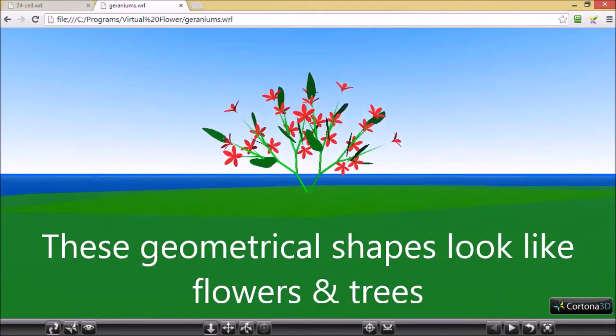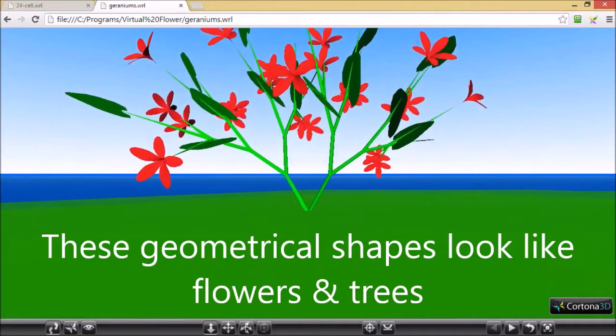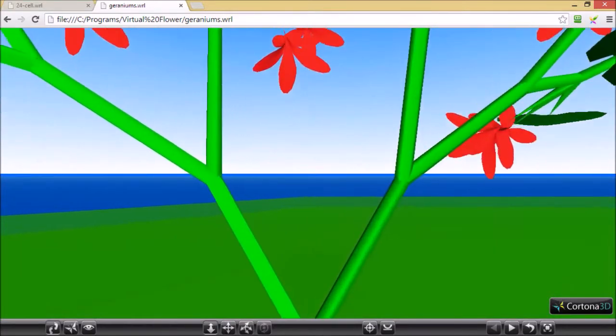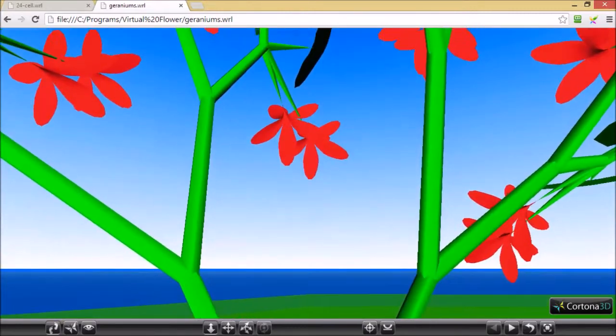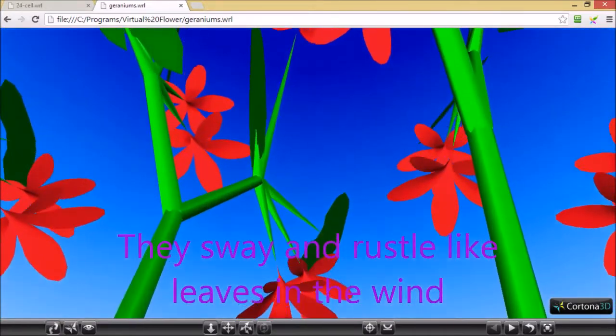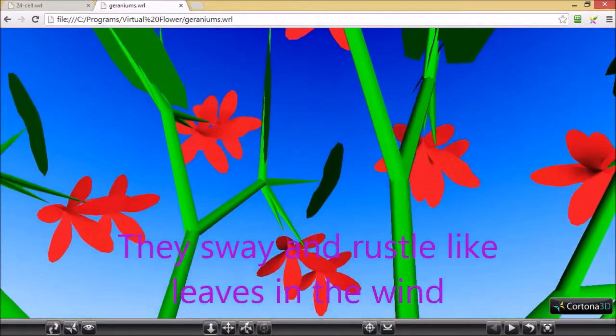These geometrical shapes look like flowers and trees. They sway and rustle like leaves in the wind.